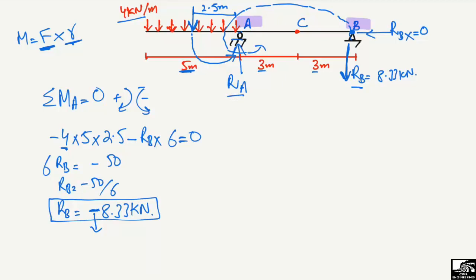To find RA, we take the summation of vertical forces equal to zero, with upward forces positive and downward forces negative. The upward force is only RA (positive). The downward forces are the distributed load: minus 4 kN/m multiplied by 5 meters.